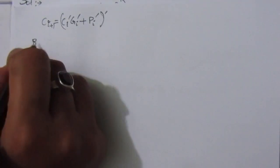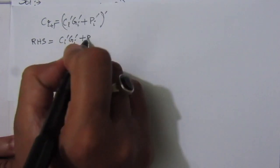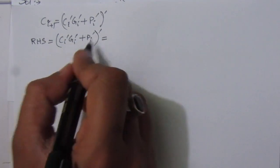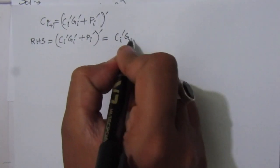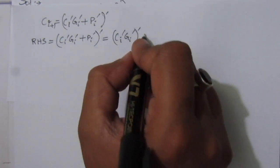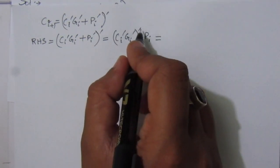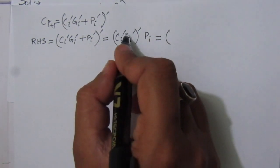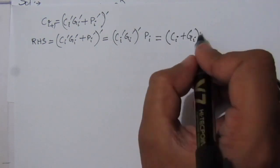Let us consider the right hand side of this expression. So C_i dash, C_i dash, plus P_i complement, whole complement. This is of the form A plus B whole bar, which we can write as A bar dot B bar. So we write C_i dash, C_i dash, whole complement, times P_i complement complement, which gives P_i. So this is A dot B whole bar, which we write as A bar plus B bar.